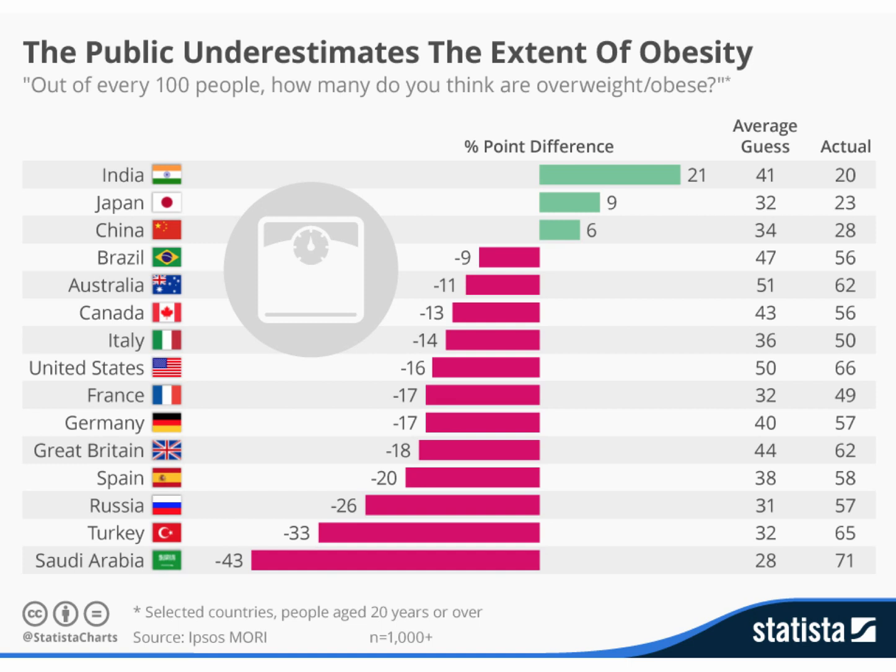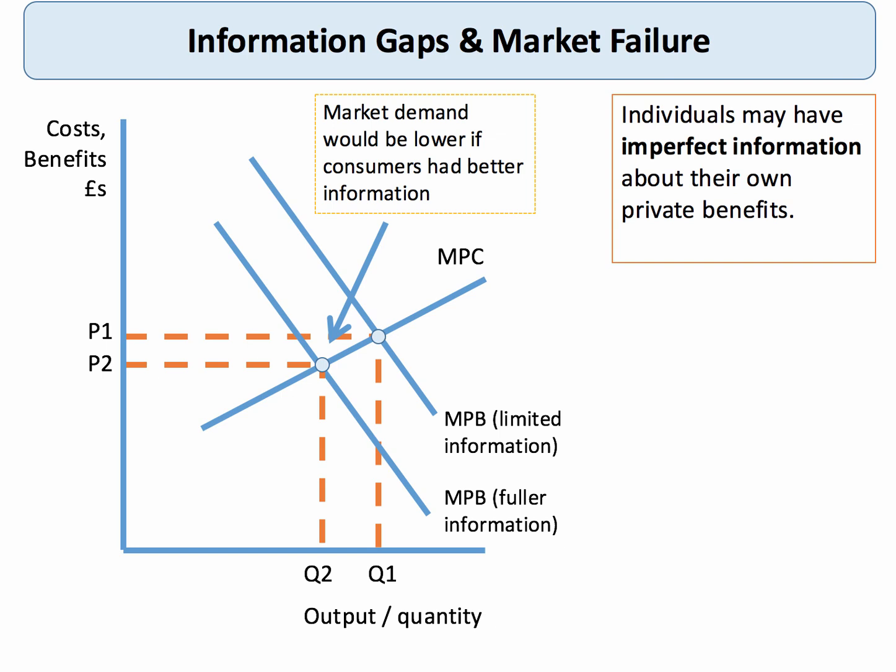Americans are not too far off — a 50% guess versus an actual figure of 66%. But this hints that obesity is clearly a major issue, yet many people don't fully appreciate the true scale of it. One of the analysis diagrams you can use with demerit goods is the information gap diagram.